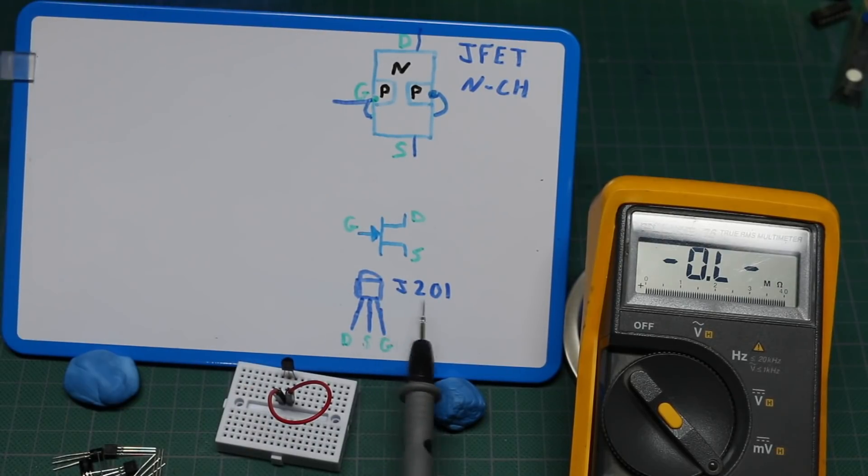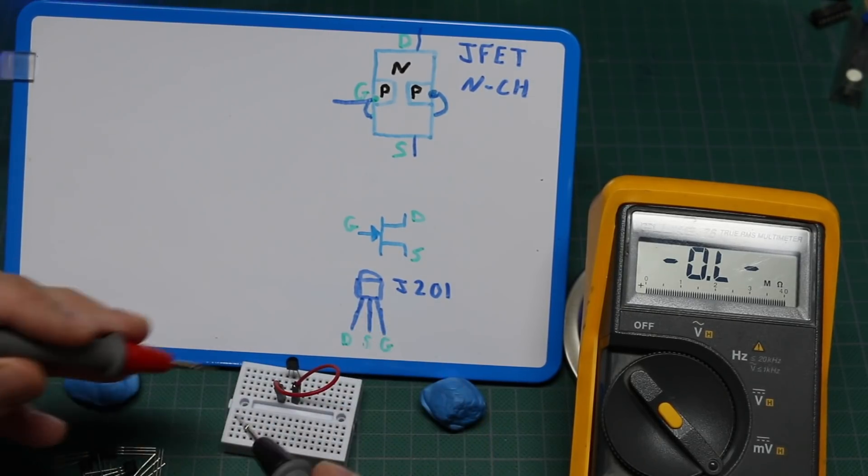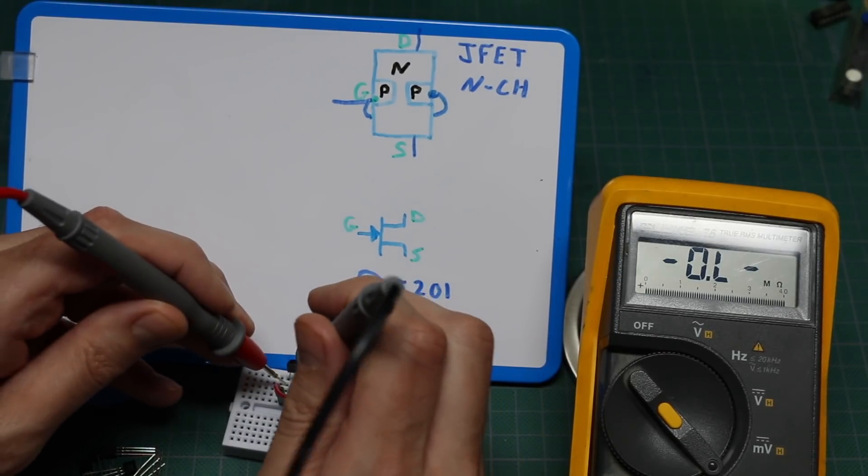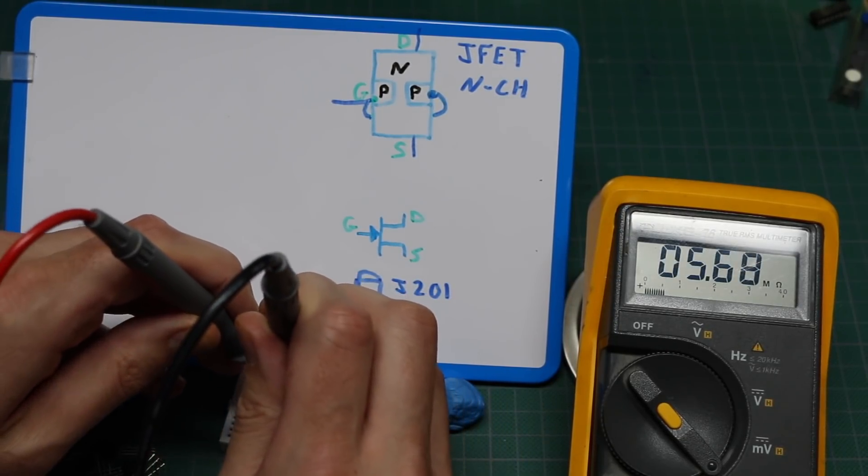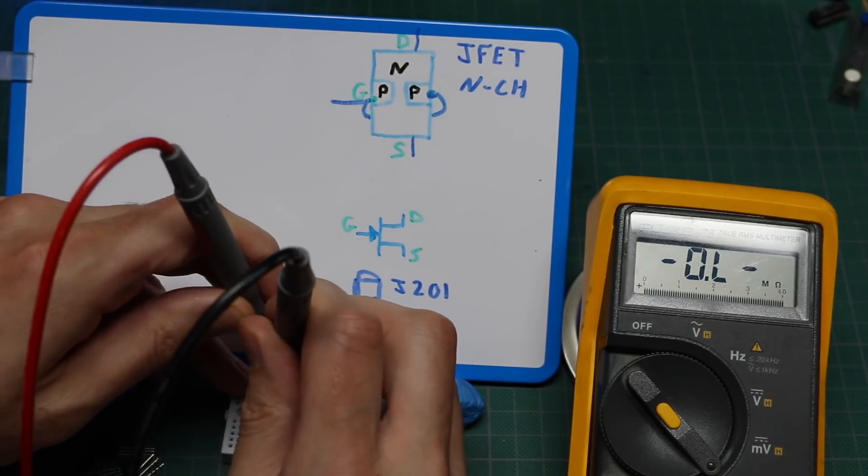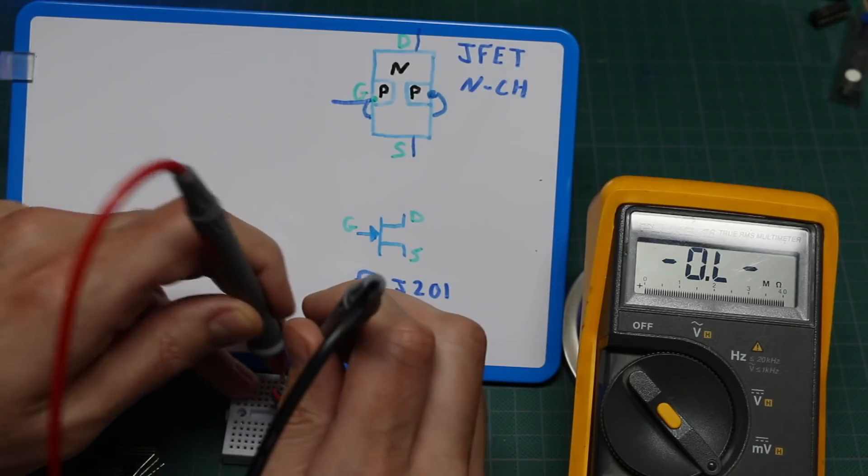So what if for some reason the pinouts are different? Let's keep the wire on the gate and instead of source, let's move it to drain. Now measure resistance from those outside pins to the center pin. Five and a half megohms and nothing with reverse polarity.